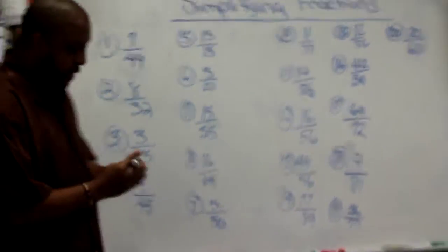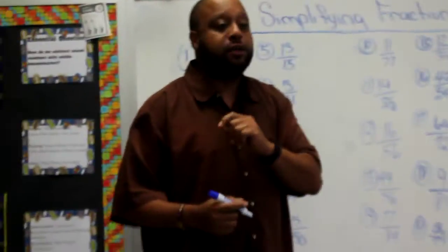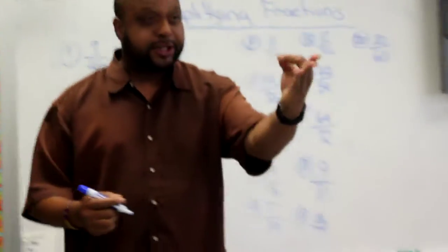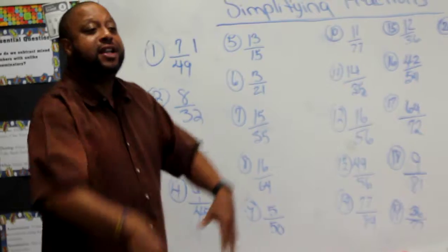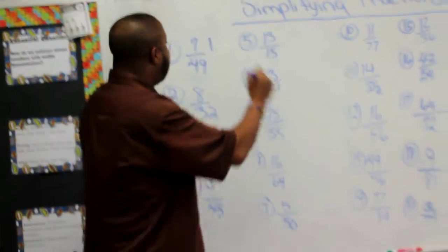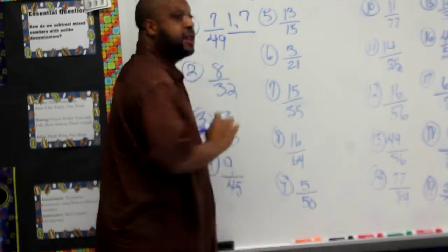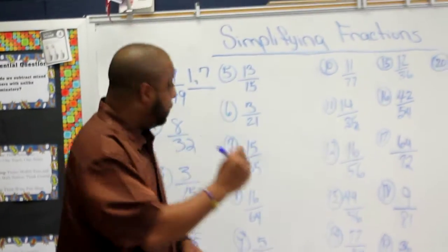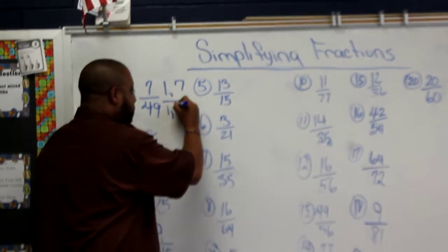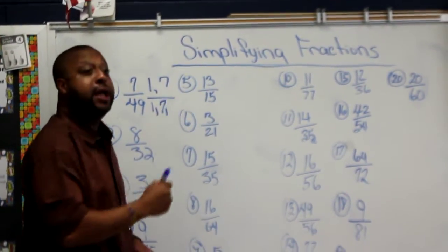So let's try that method. Now let's look at 7. What is the first factor of 7? 1. Very good. And we know that 7 is a prime number. What's the next factor of 7? 7. So we have 1 and 7. Now we need to find the factors of 49. What are they? 1, 49, and 7. Good job.